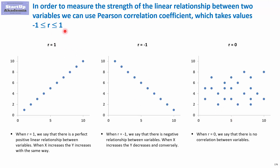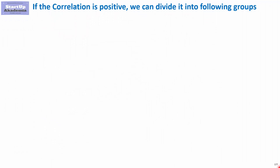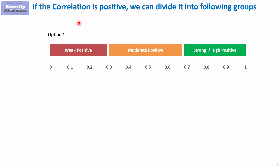The Pearson correlation coefficient can be any number between minus one and one, and we divide them into two groups with categories. The first one is positive correlation, from zero to one, which we can divide into weak, moderate, and strong or high positive correlation. In one common convention, weak is between zero and 0.3, moderate between 0.3 and 0.7, and high positive is between 0.7 and 1.